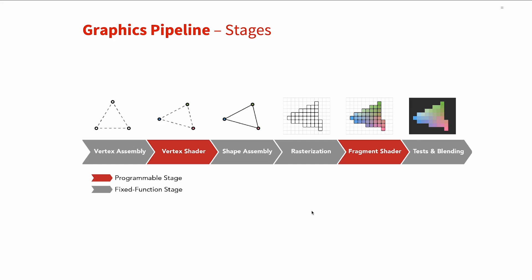The first is the fixed function stage shown in gray. These stages are controlled by the graphics API. However, the second type, the programmable stage shown in red, these are, as the name implies, programmable. So we can customize the behavior when rendering. These are called shaders, and there are two main types: the vertex shader and the fragment shader. The vertex shader is responsible for the position of the vertices, so how they are projected from space to your screen. The fragment shader controls the color of the pixels that map to the object.